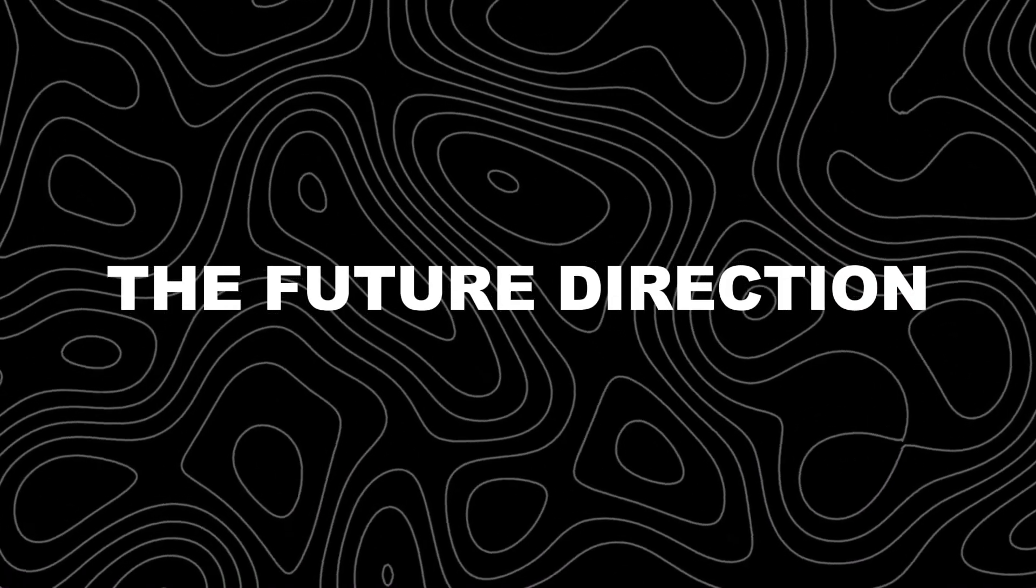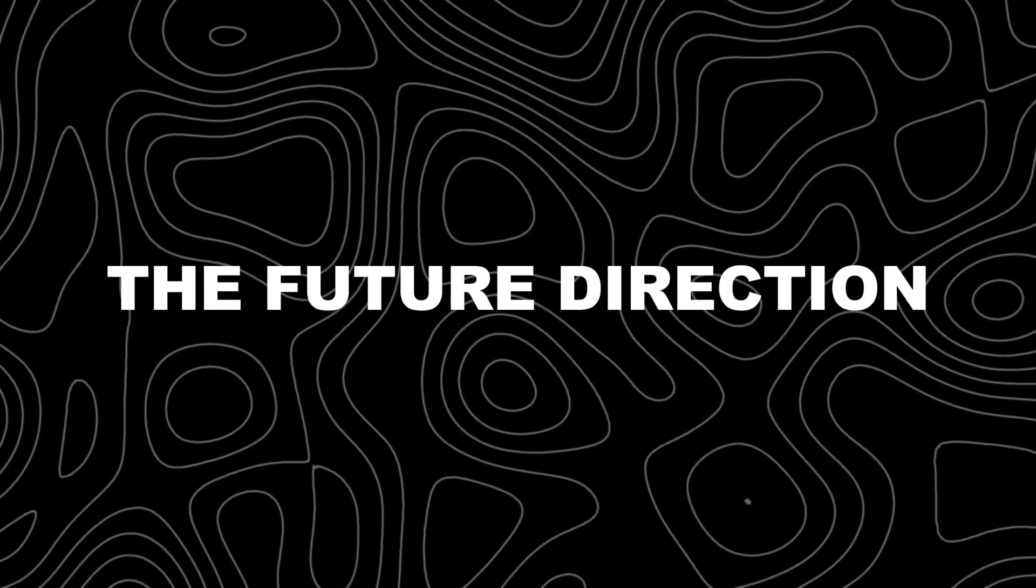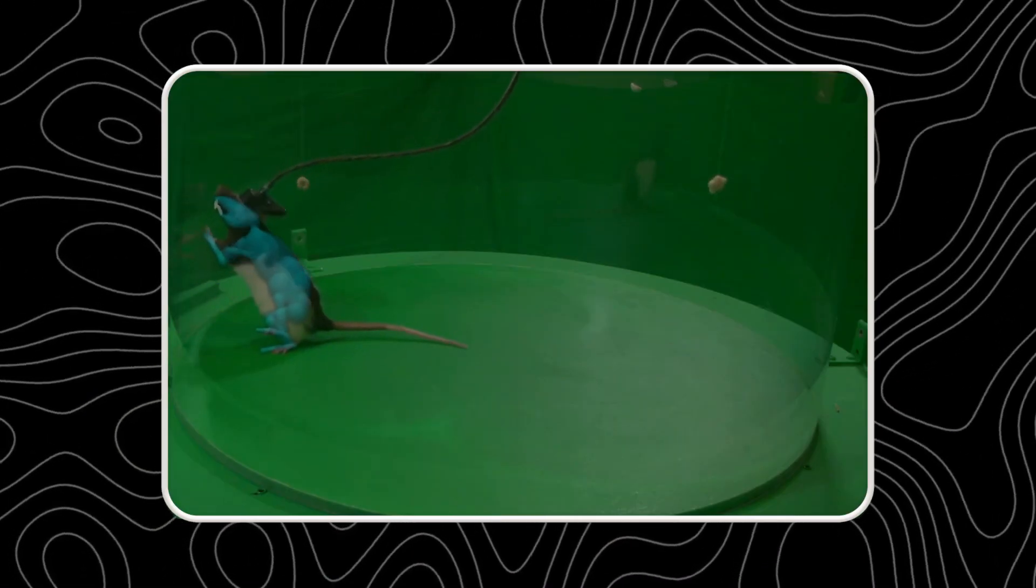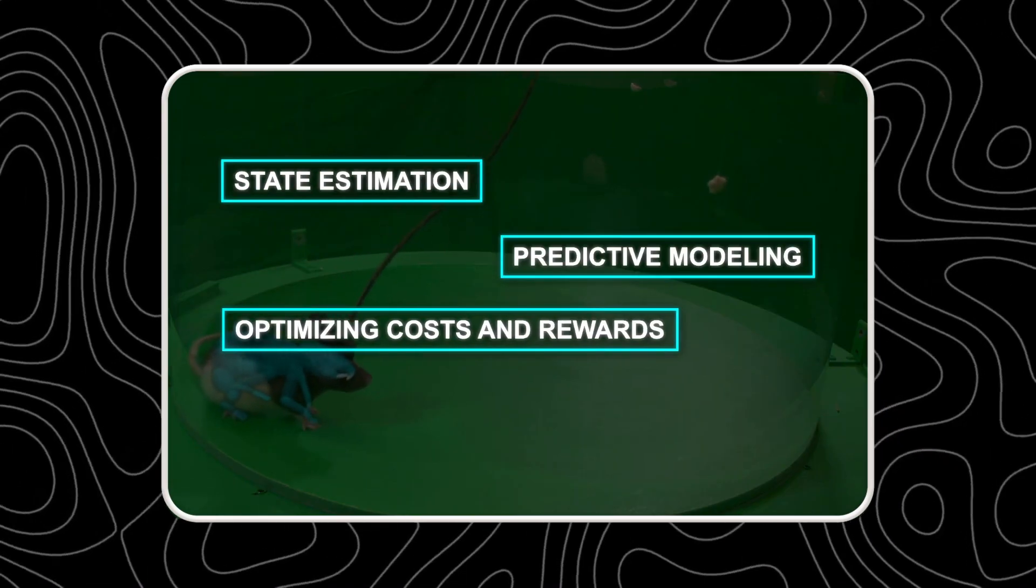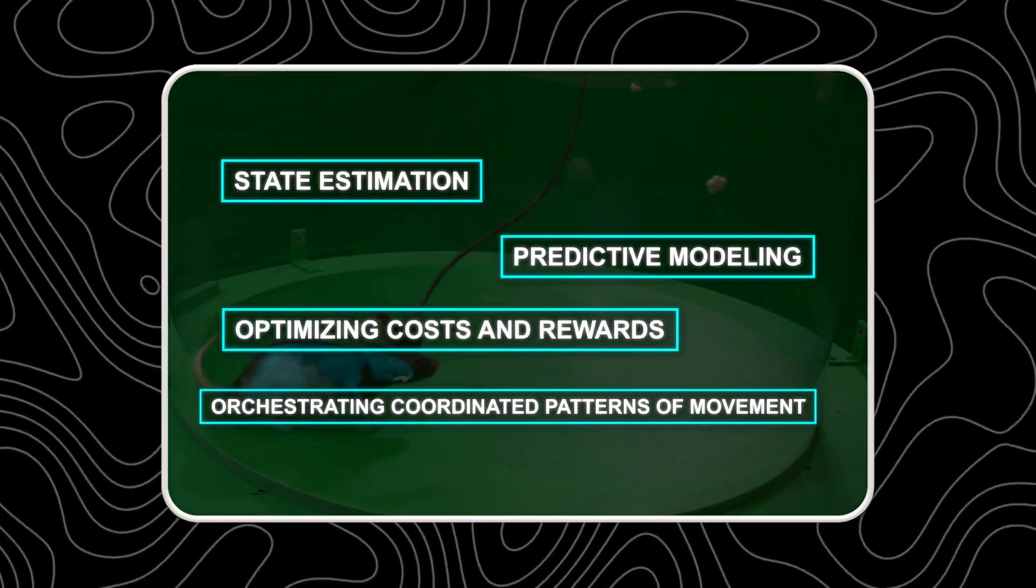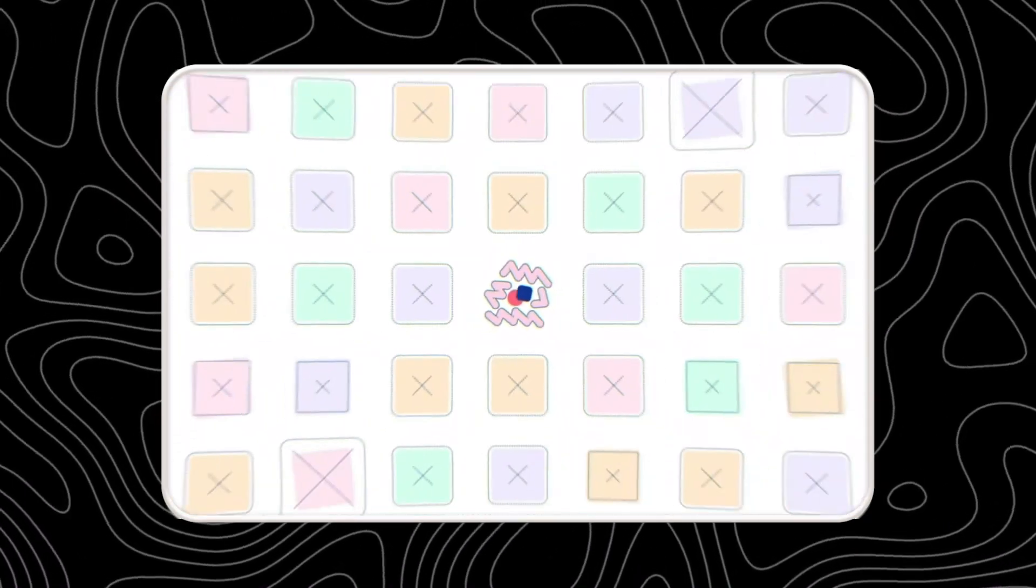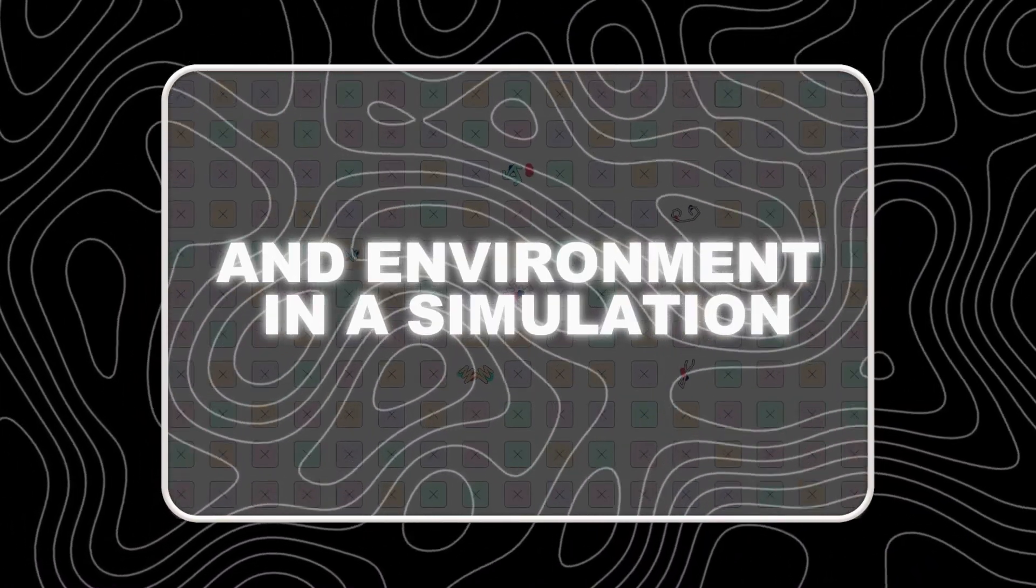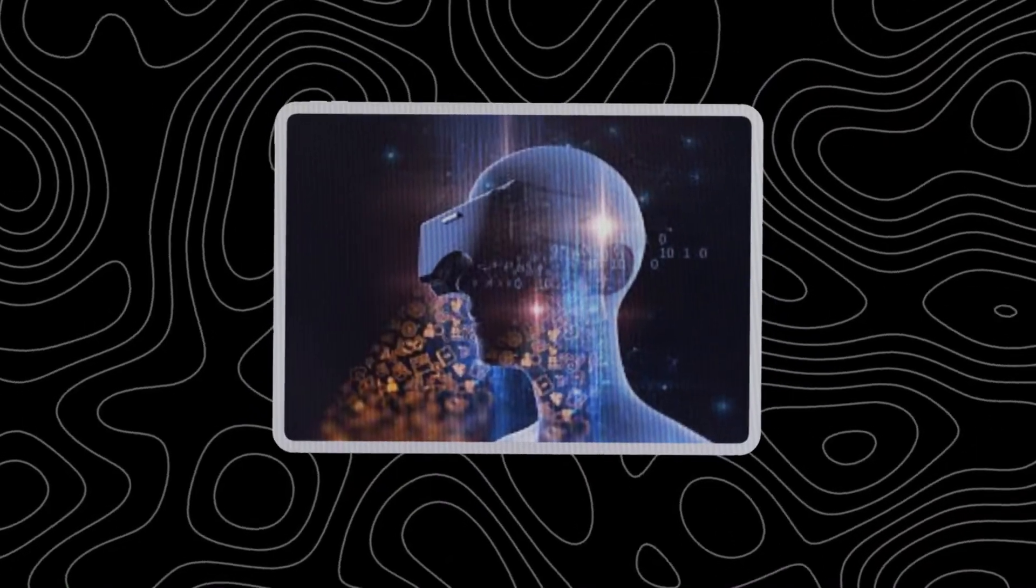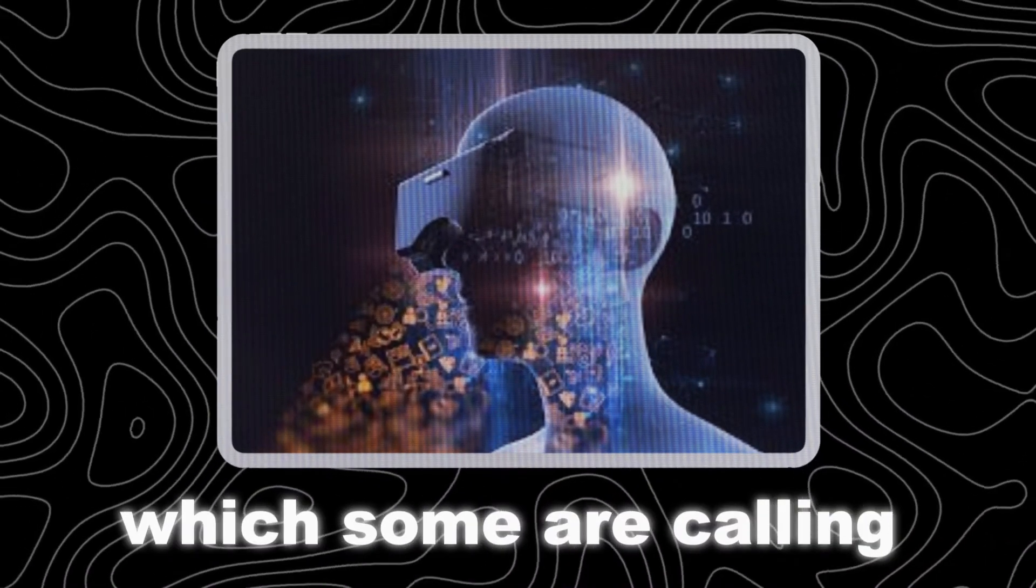There is still a lot to learn in this area, but the virtual rat brain has created a new way to study motor control and brain function that wasn't possible before. Instead of just recording neural signals during behavior, neuroscientists can now explore and manipulate a complete model of the brain, body, and environment in a simulation. This marks a new era, which some are calling virtual neuroscience.